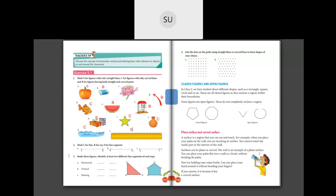Next, mark L for line, R for ray, and S for line segment. AB has two arrows at both ends, so it can extend on both sides — it is a line, mark L. PQ has two endpoints P and Q and cannot extend further — it is a line segment, mark S. XY has one arrow at Y so it has one endpoint and is extending on the other side — it is a ray, mark R.